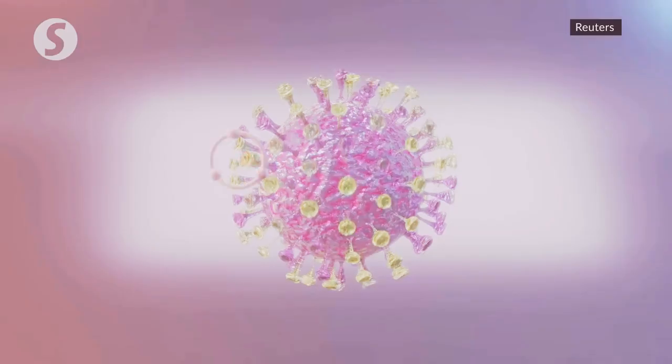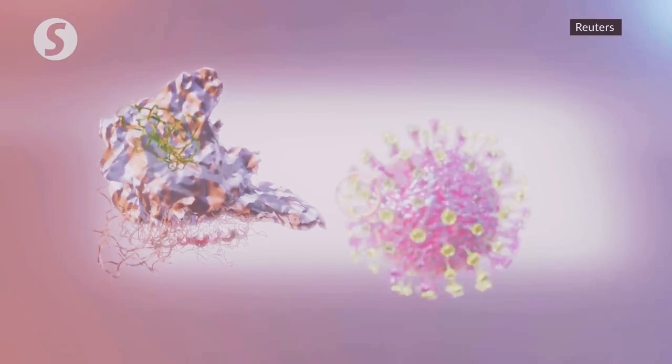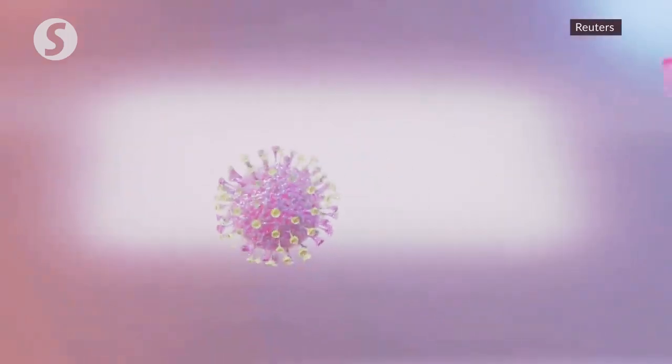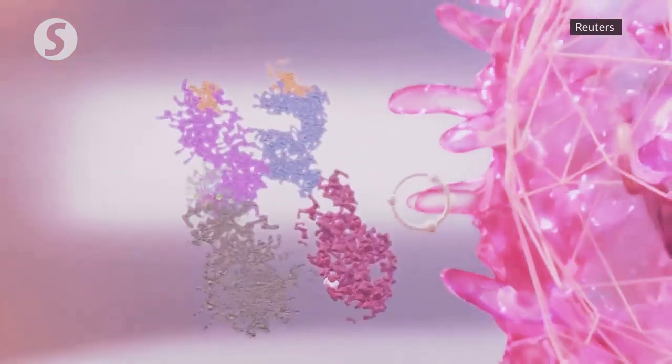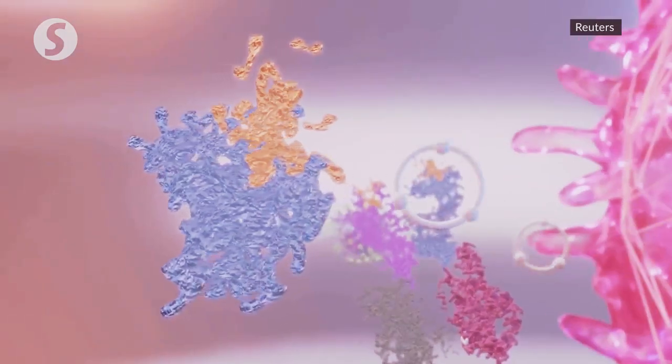A previous study published in Science found the virus spike protein has two receptor binding domains or RBDs facing downward and another facing upward. These allow the virus to bind with and invade human cells.